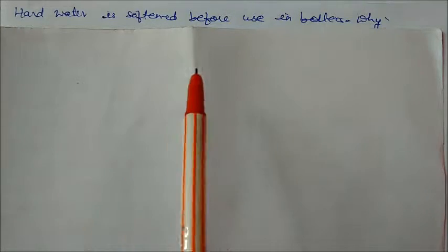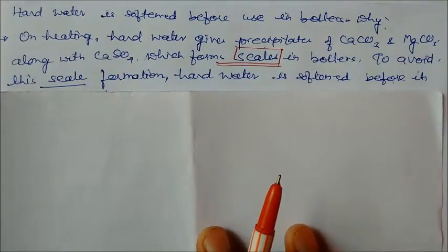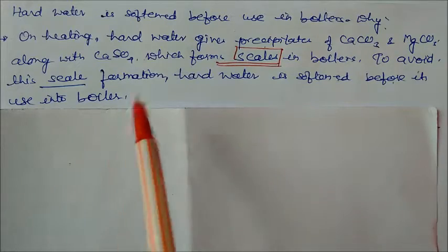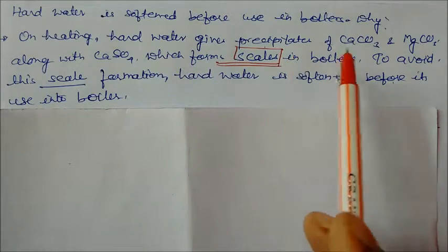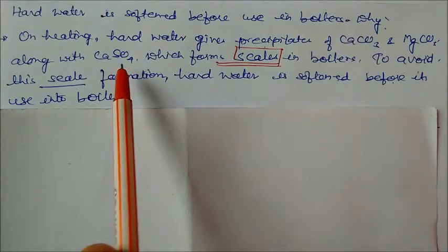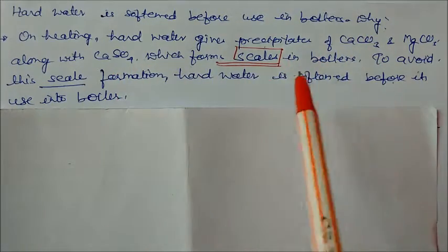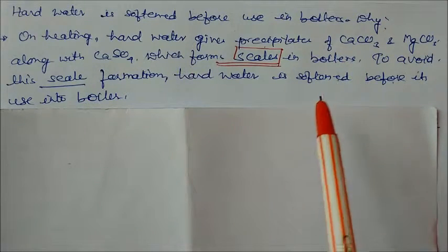Why soften hard water before use in boilers? On heating, hard water gives precipitate of calcium carbonate and magnesium carbonate along with calcium sulfate, and these form scales in the boilers. To avoid scale formation, hard water is softened before it's used in boilers.